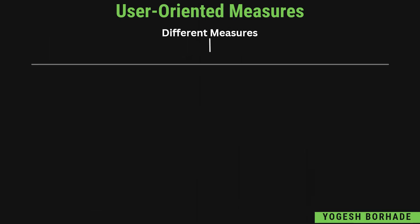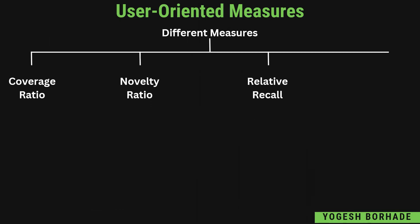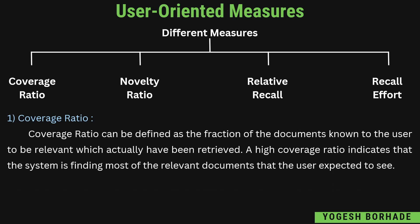तो different measures — यहाँ basically 4 different measures हैं: first है coverage ratio, second है novelty ratio, third है relative recall, और fourth है recall effort। Coverage ratio को define किया जाता है fraction of the documents known to the user to be relevant which have actually been retrieved। यहाँ known to the user and relevant मतलब वो retrieve भी हुए — उसको R(k) denote करेंगे, divided by mod of U। अगर coverage ratio की value ज्यादा है तो वो indicate करता है कि system most relevant documents जो user देखना चाहता है उसको display कर रहा है।